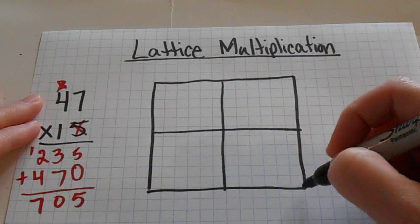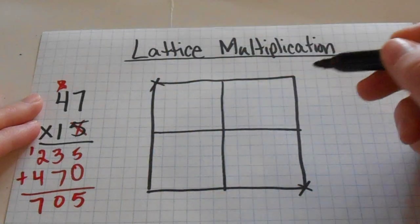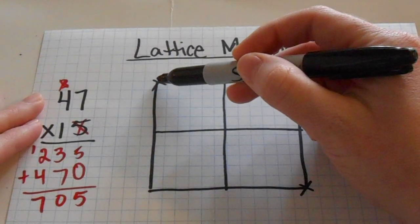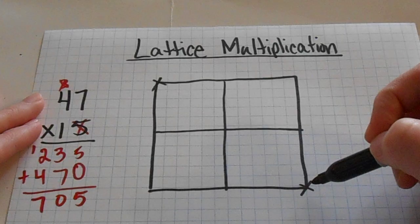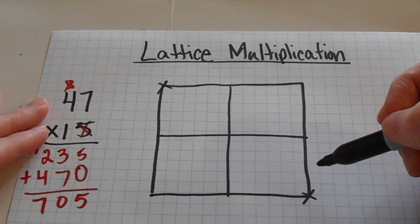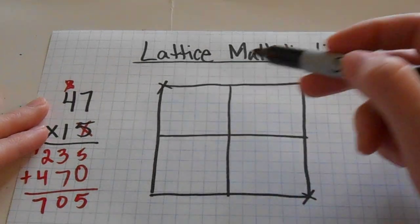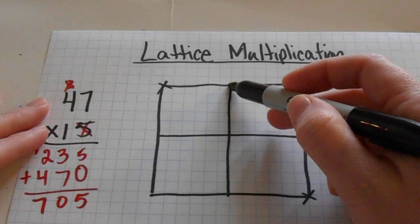Now to help me remember, I sometimes will put an X in these corners. So I put an X in the top left hand corner and the bottom right hand corner and that kind of gives me a visual of how to set up my diagonals.